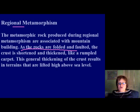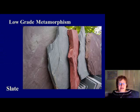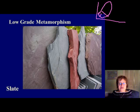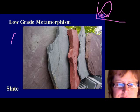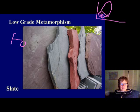Now let's go through the metamorphic rocks from low to high grade. Starting with low-grade metamorphism — on the PT diagram this is where pressure and temperature are relatively low. The rock you need to know here is slate. The texture of slate is foliated, and the minerals in it are clay minerals.